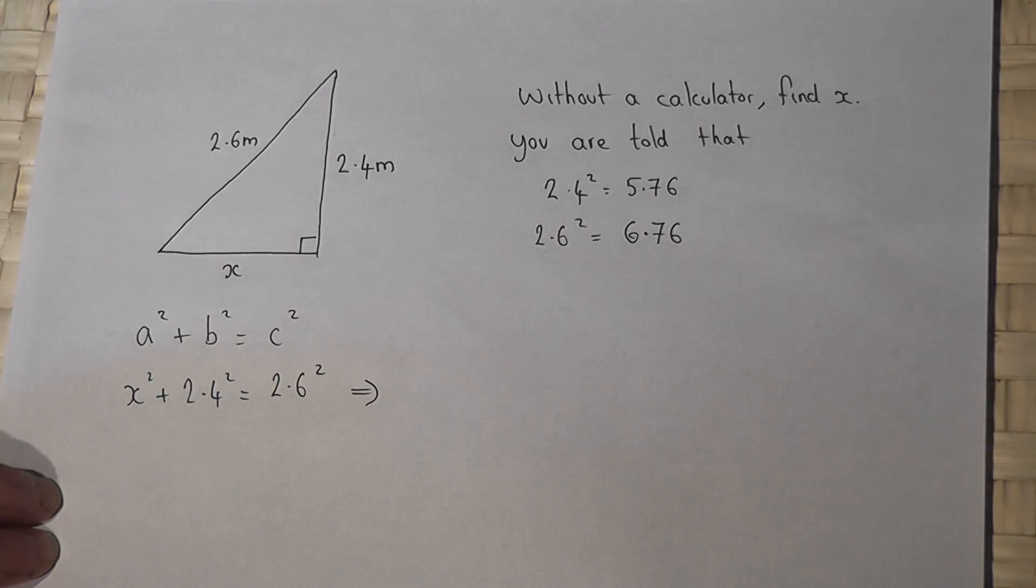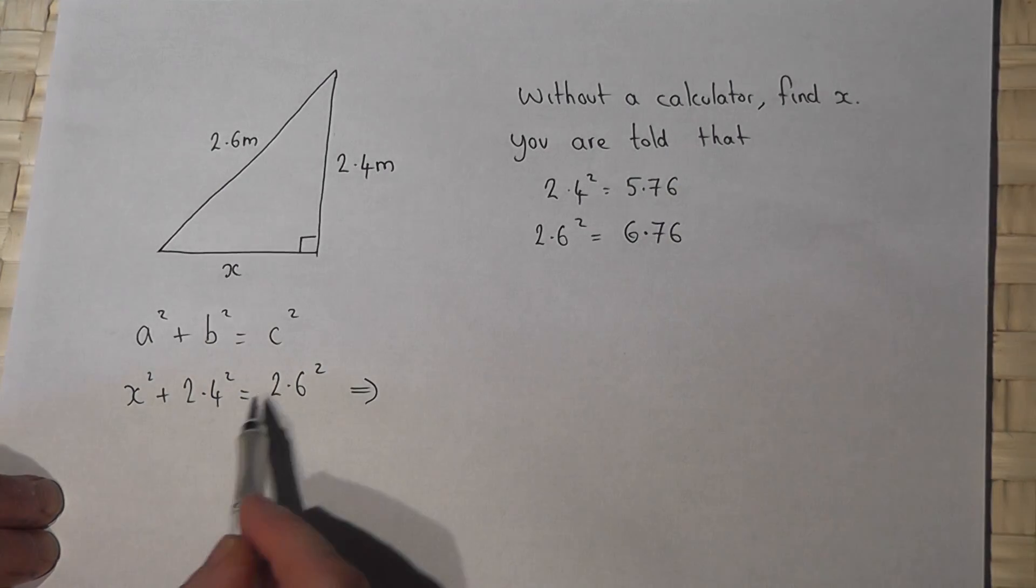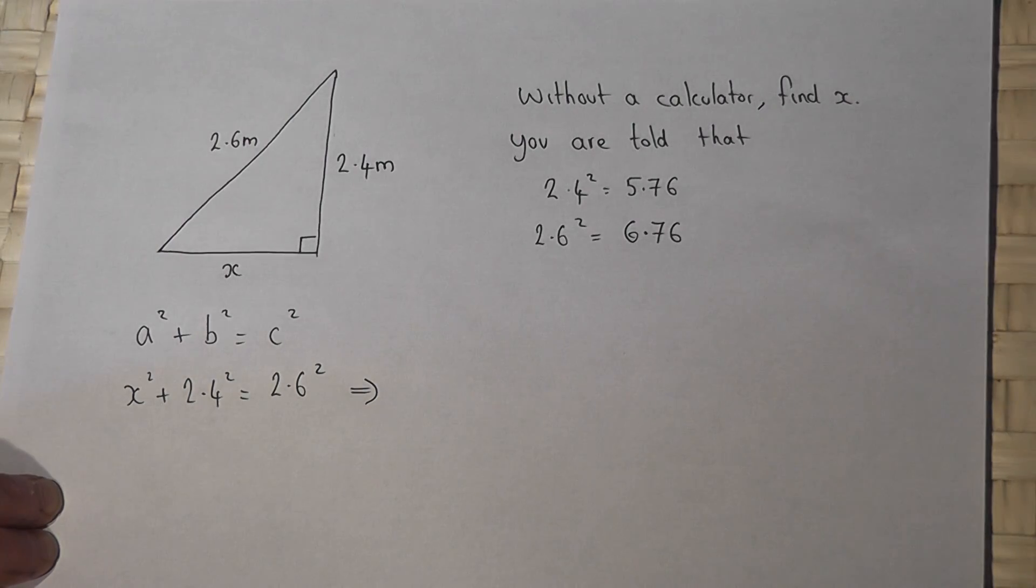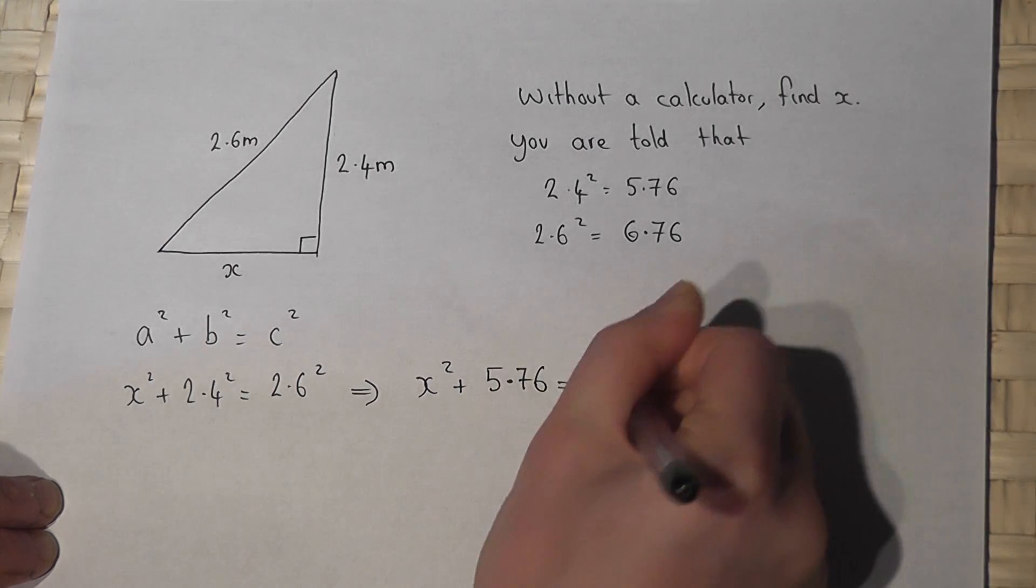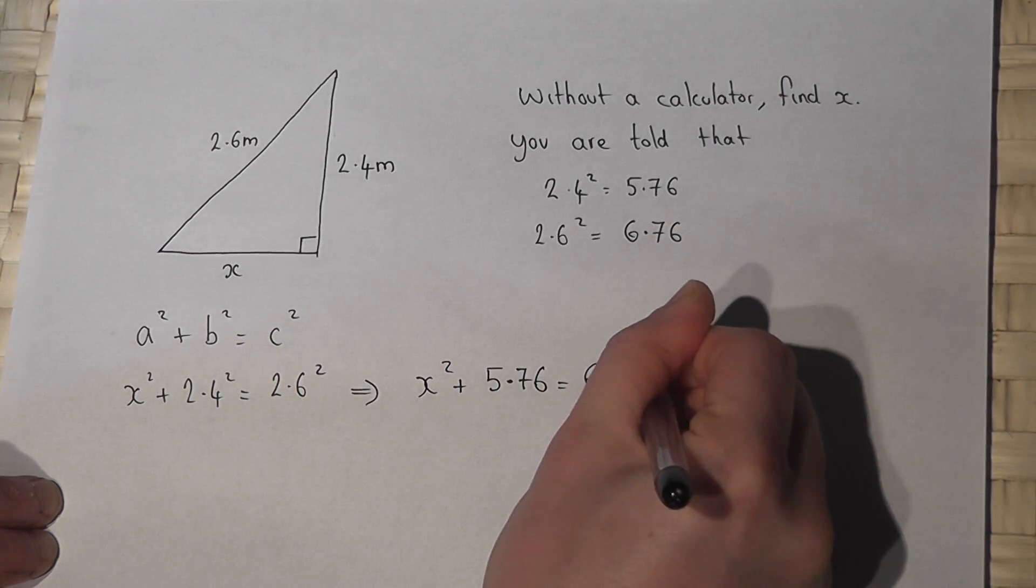Now then, we're told the value of 2.4 squared and 2.6 squared, so x squared plus 5.76 must equal 6.76.